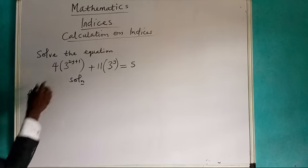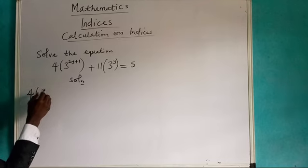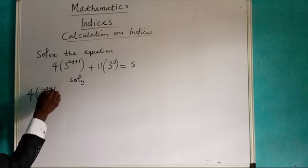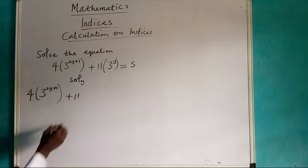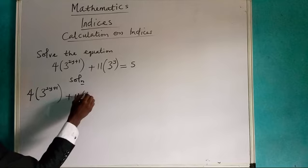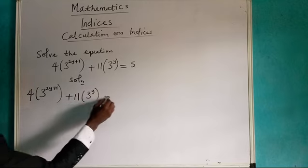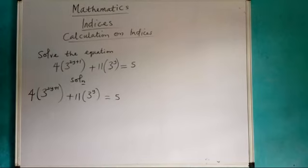We have 4 and inside the bracket we have 3 to the power 2y plus 1, and we have plus 11 and in bracket we have 3 power y equals 5. This is what we have.